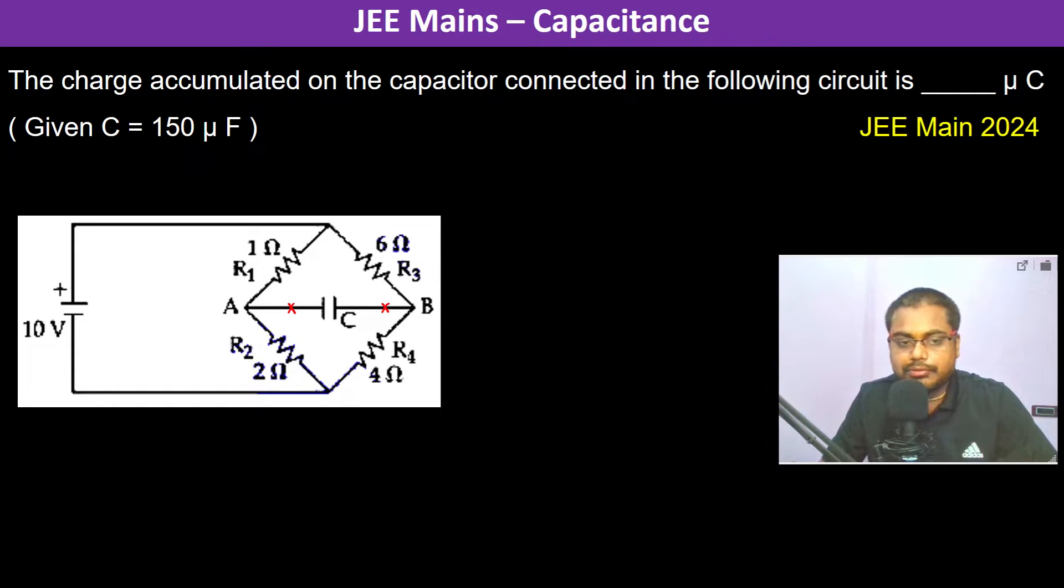Since no current flows through the capacitor, we analyze the circuit: the 6Ω and 4Ω resistors are connected in series, and the 1Ω and 2Ω resistors are connected in series. Both series combinations are in parallel.